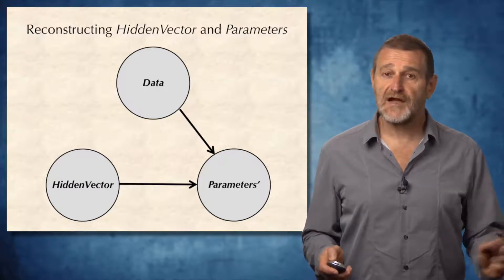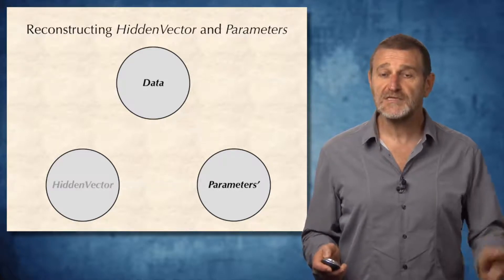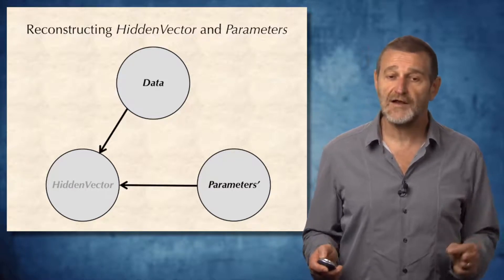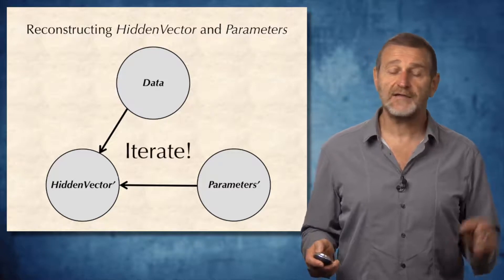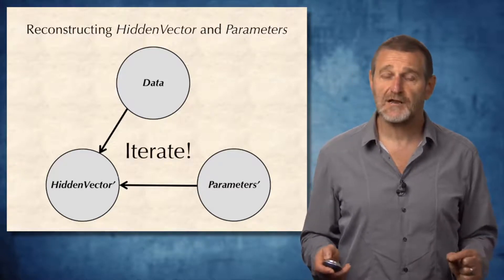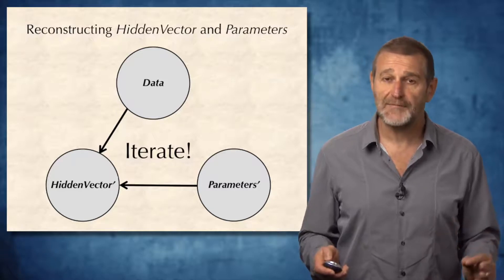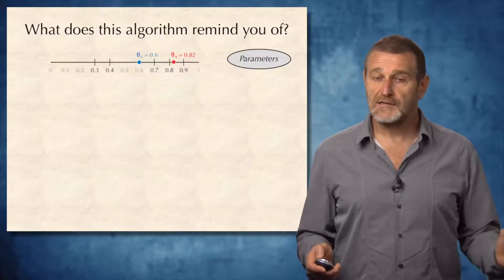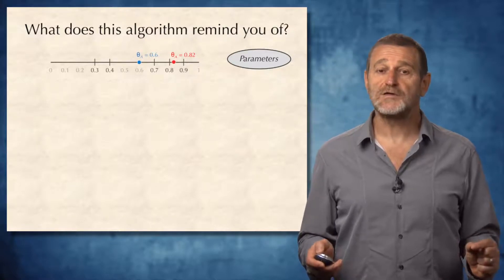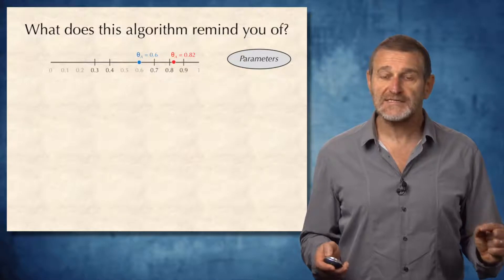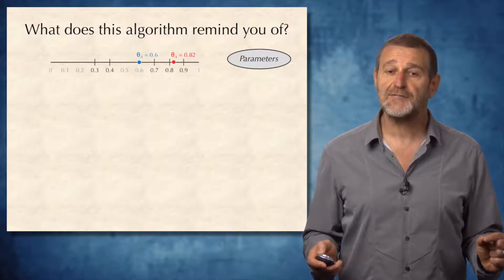In this way, we will arrive at the new parameters. As soon as the new parameters are derived, we once again evaluate the hidden vector and iterate. We came up with an approximation algorithm for evaluating parameters for the coin flip. Let me show you how this algorithm works. We start from randomly selected parameters.